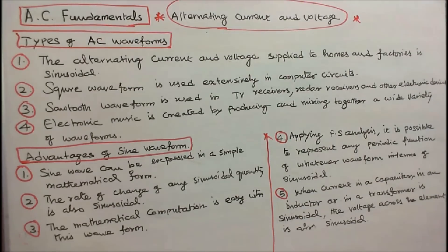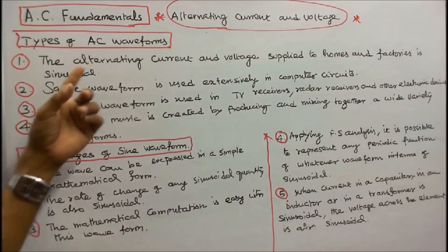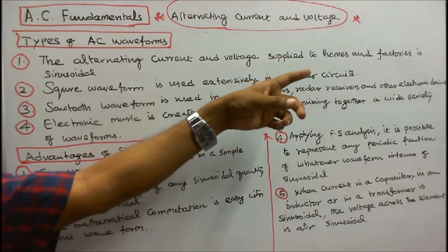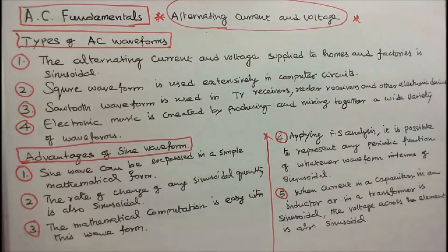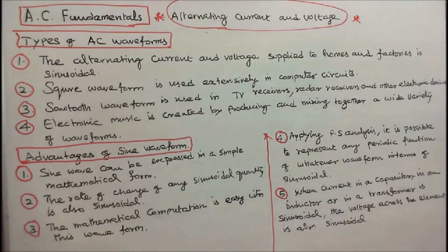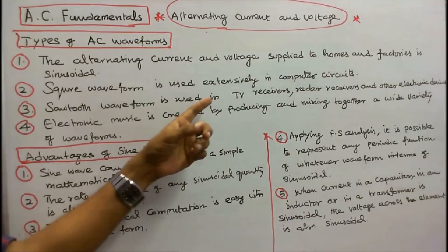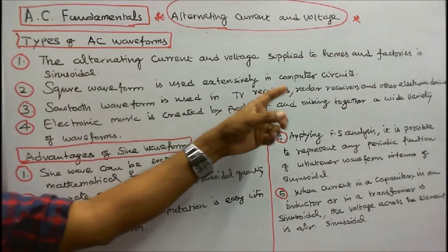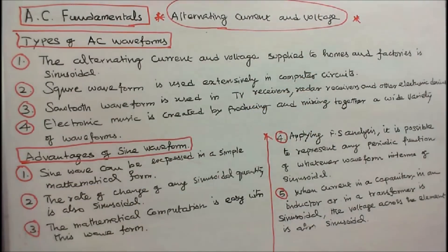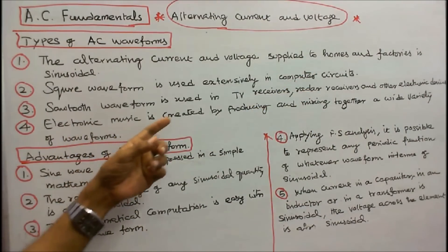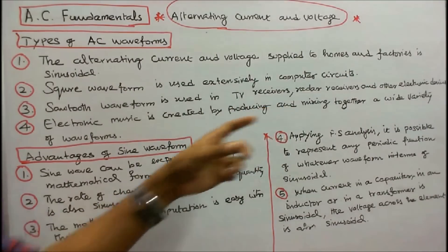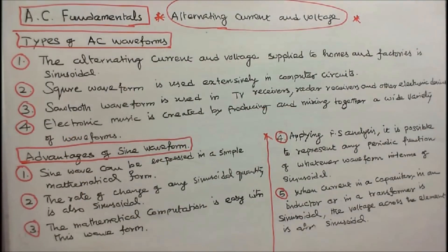Types of AC waveforms: The alternating current and voltage supplied to homes and factories is sinusoidal. Square waveforms are used extensively in computer circuits. Sawtooth waveforms are used in television receivers, radar receivers, and other electronic devices. Electronic music is created by producing and mixing together a wide variety of waveforms.